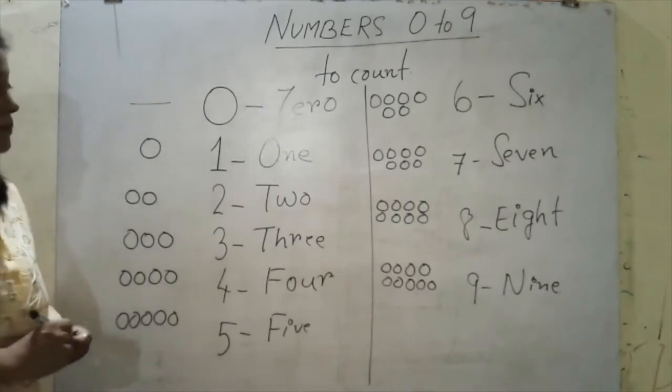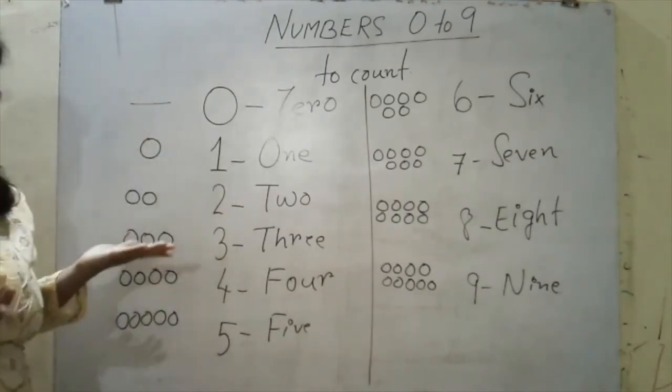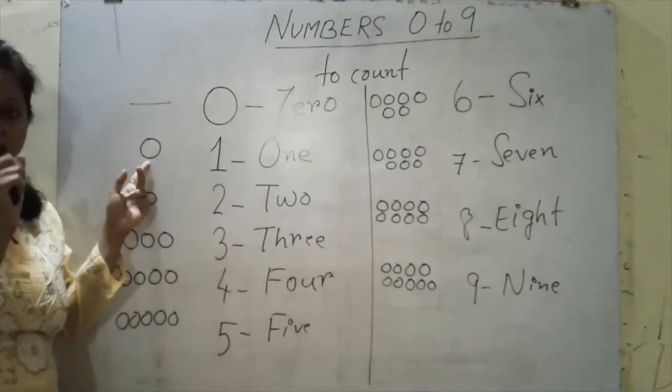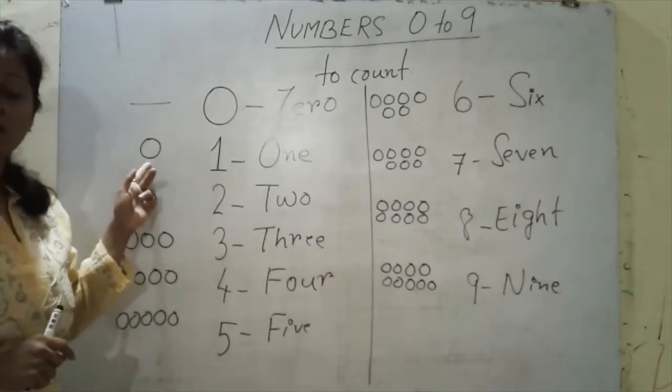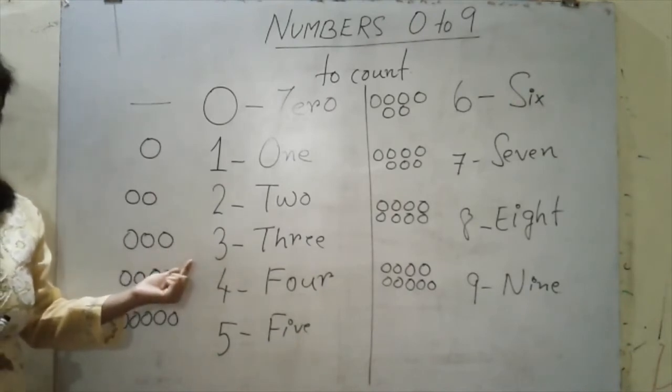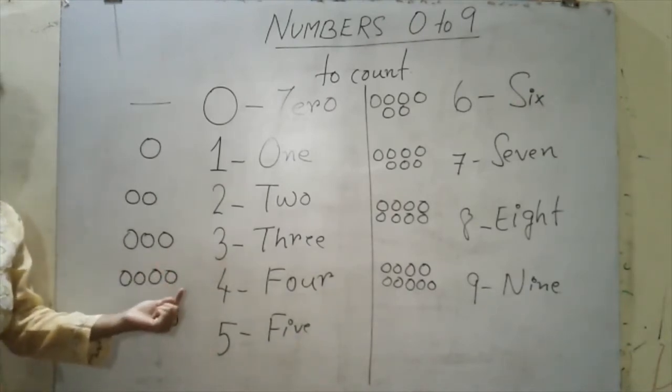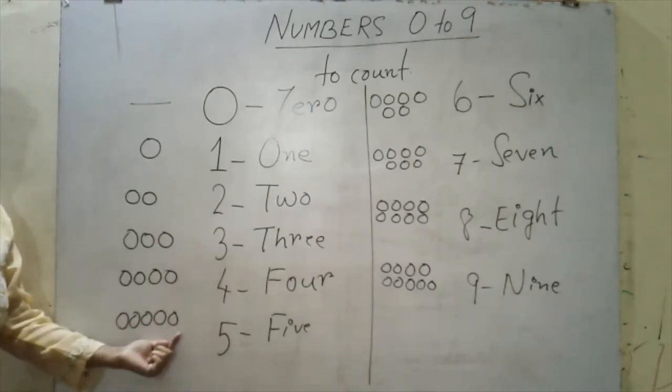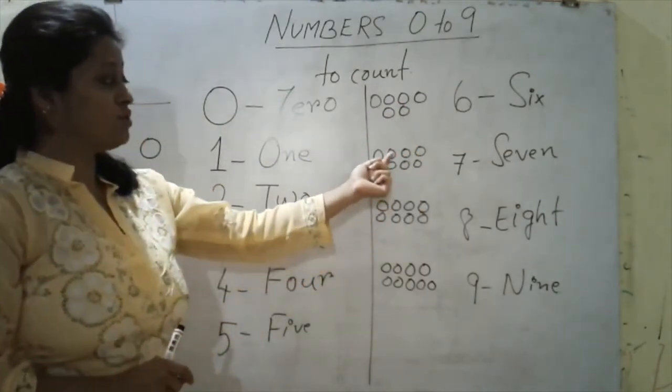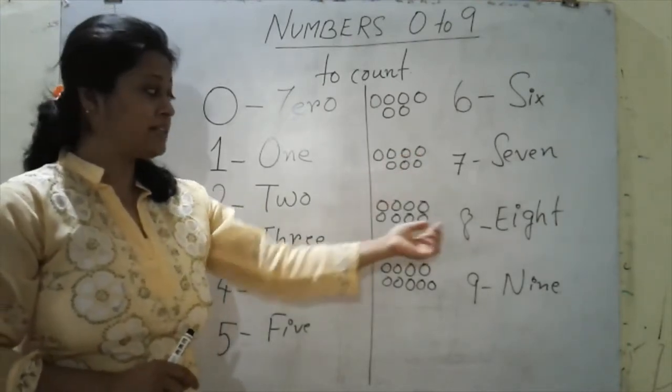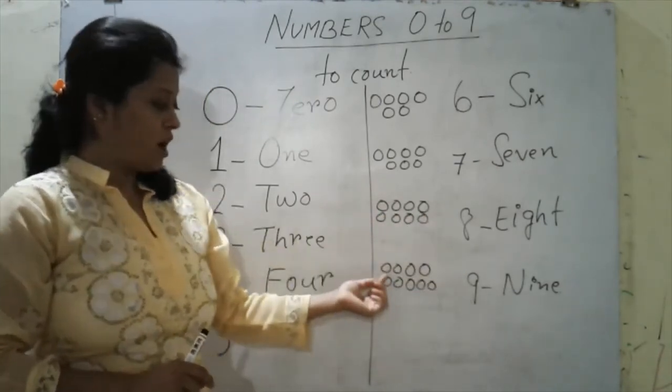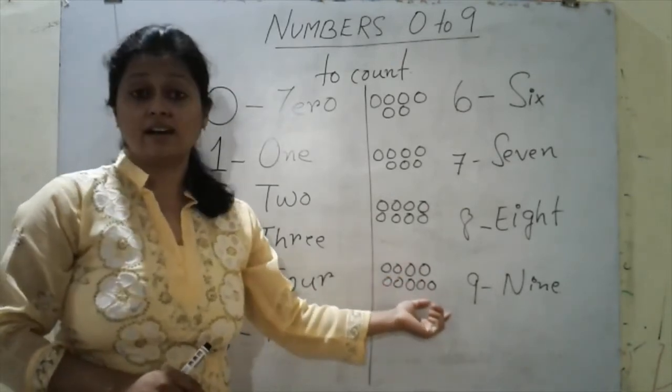So you understand children? When I say zero, it means nothing, empty. I have no laddus. When I have one, I mean this, just one piece, one single piece of laddu. When I say two, one, two. When I say three, one, two, three. For four, one, two, three, four. For five, one, two, three, four, five. For six, one, two, three, four, five and six. For seven, one, two, three, four, five, six and seven. For eight, one, two, three, four, five, six, seven and eight laddus. For nine, one, two, three, four, five, six, seven, eight and nine laddus.